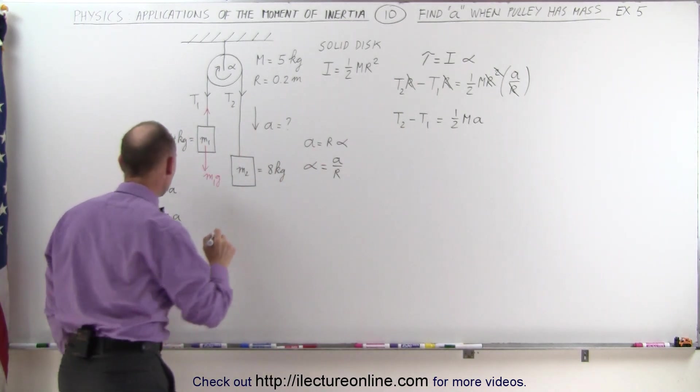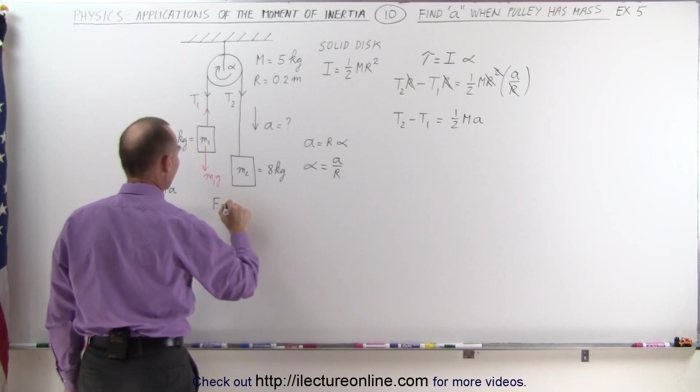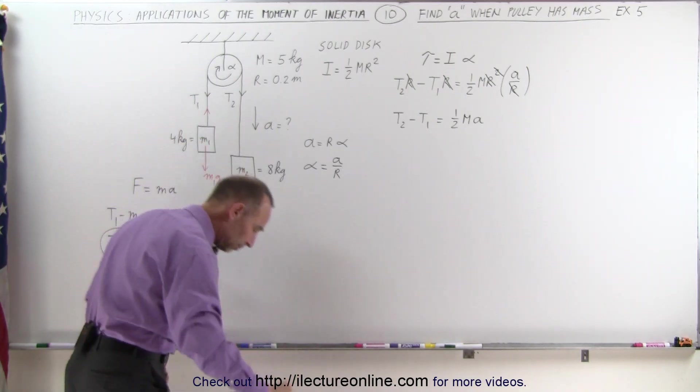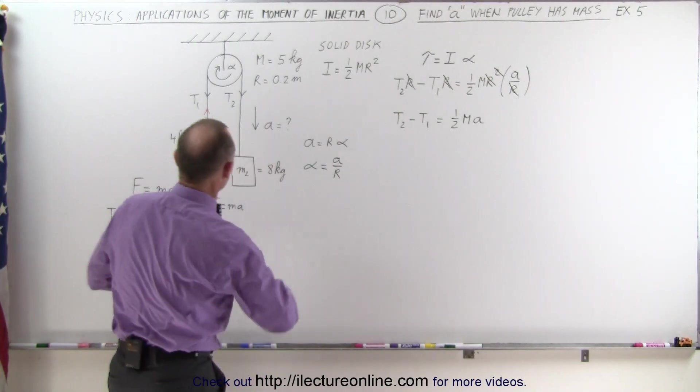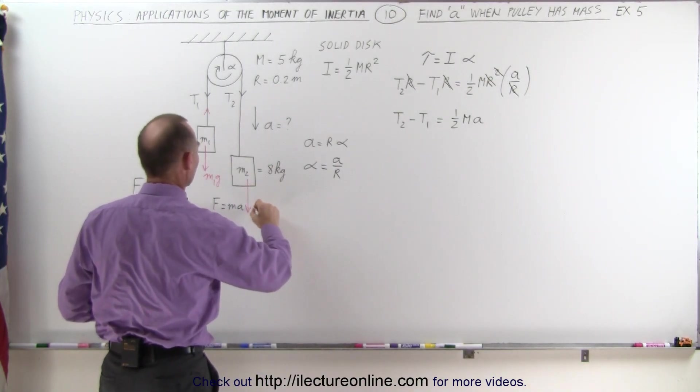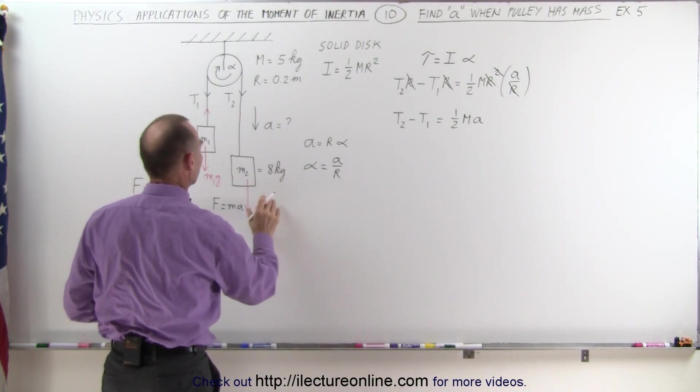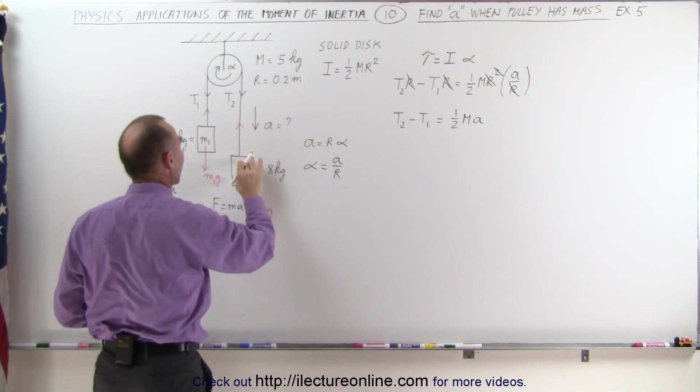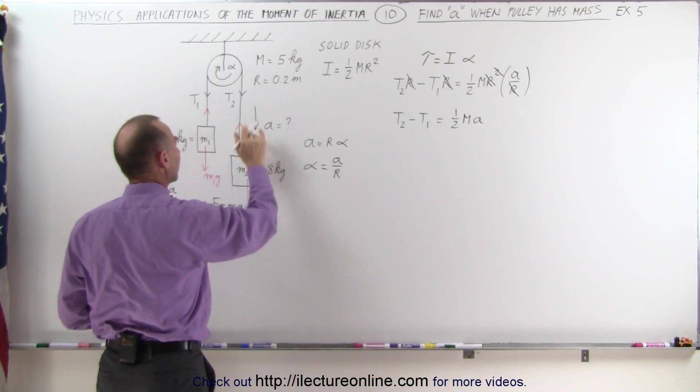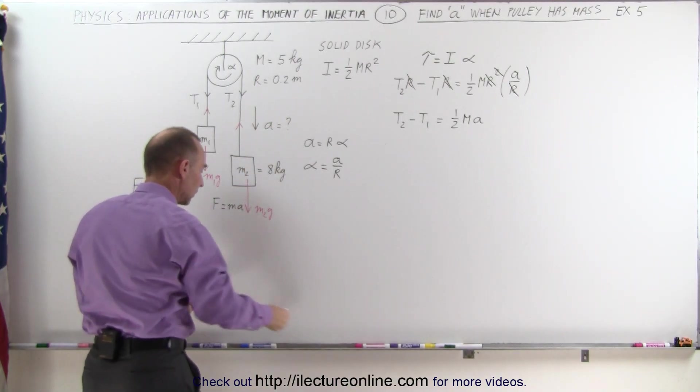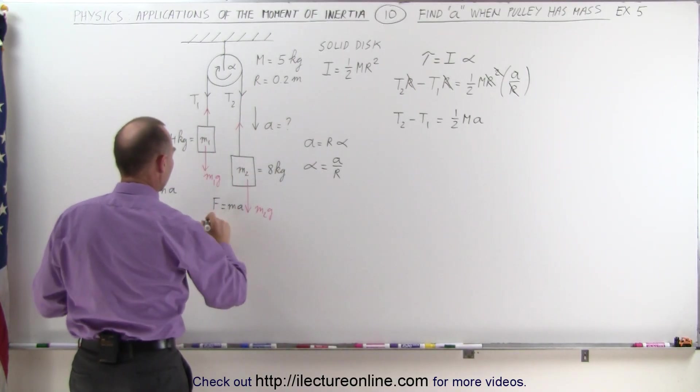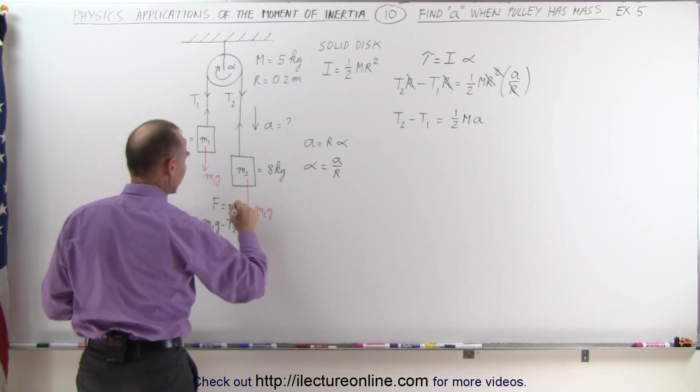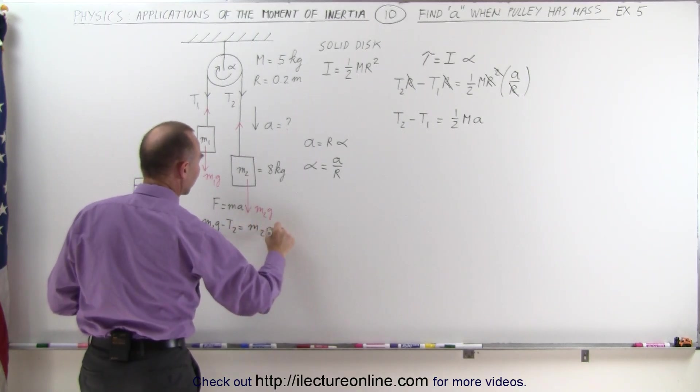We can do the same for T2. We can write again that F equals MA. Again, we have a force due to gravity. Here's the force due to gravity, which is M2G, which we assume to be larger than T2, which is pulling upward relative to M2. If this is larger than this, acceleration will be downward. So the net force is M2G minus T2, which is equal to the mass M2 times acceleration.